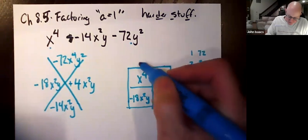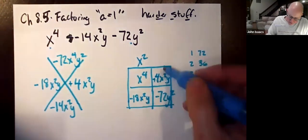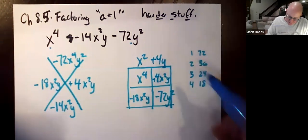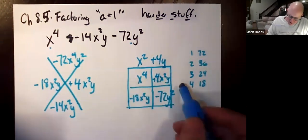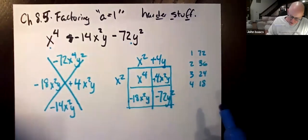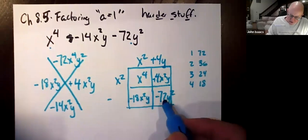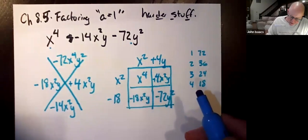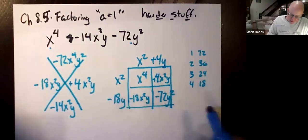Take the greatest common factor. That's x squared. Take the greatest common factor. That's plus 4y. Take the greatest common factor. That's x squared. The greatest common factor, negative 18 goes into 72. So negative 18 y. Okay.